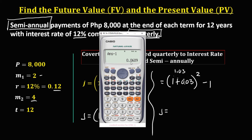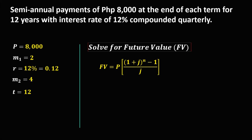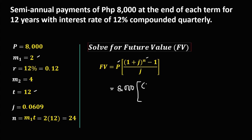Solving for J gives us 0.0609. Now to solve for the future value using the future value formula. N equals M1 times time, so N equals 2 times 12, which gives N equal to 24. The future value formula is: periodic payment of 8,000 times (1 plus J, where J is 0.0609) to the power N of 24, minus 1, then divided by J (0.0609).